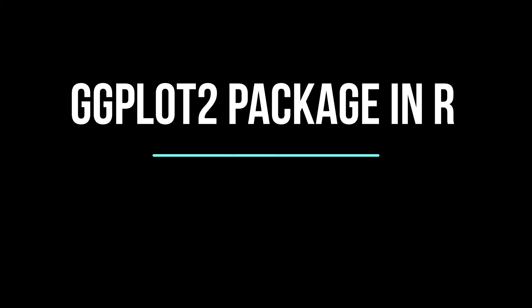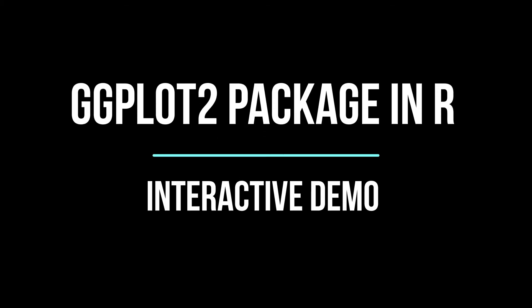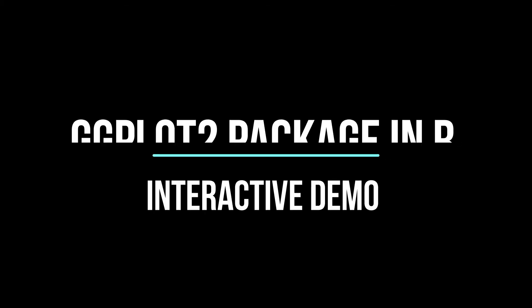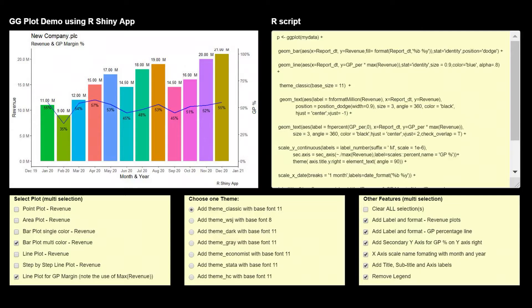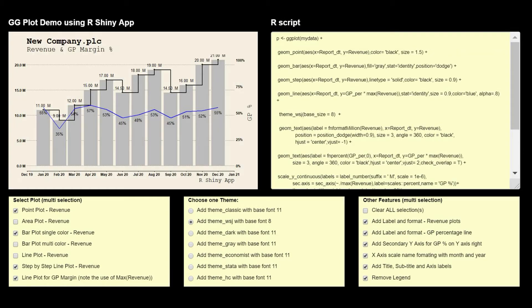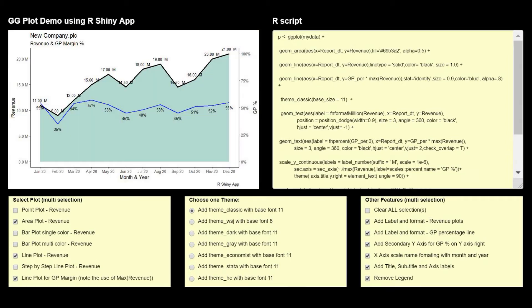This demo covers step-by-step ggplot using the ggplot2 package in R. On the screen, the top left side has the plot output. The top right text box has the R script. The bottom portion of the screen has options for plot type, theme, formatting, and layouts.